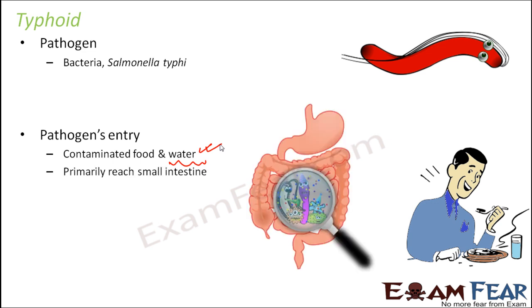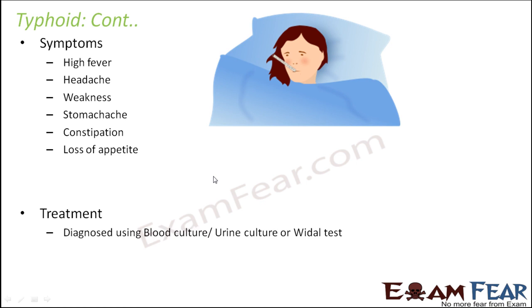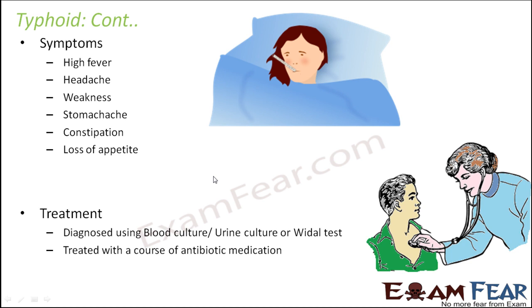Once this pathogen enters the body, it directly affects the small intestine, which is responsible for digestion and absorption of food, so the entire process gets hampered. Symptoms during typhoid include high fever, headache, weakness, stomach ache, constipation, and loss of appetite. You tend to remain ill for quite a few weeks. To avoid such situations, all we need is cleanliness. It is diagnosed with blood tests and urine tests and treated with a course of antibiotic medication. But prevention is always better than cure — proper sanitation must be maintained, and we must drink clean water, making wastewater management very important.